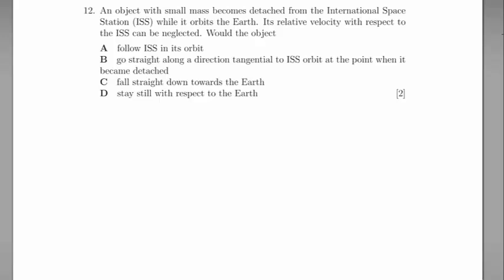Would the object follow the ISS in its orbit, go straight along a direction tangential to the ISS orbit at the point where it became detached, fall straight down towards the Earth, or stay still with respect to the Earth?